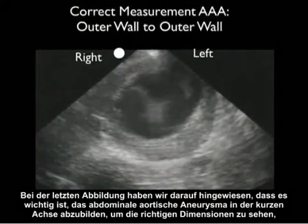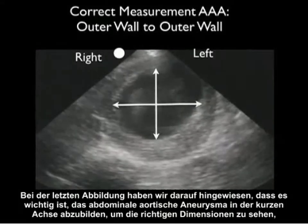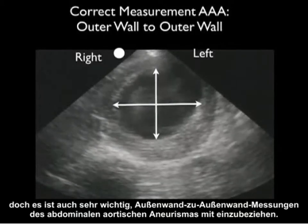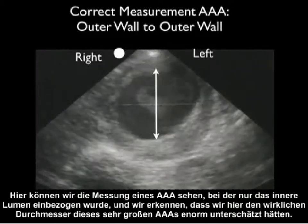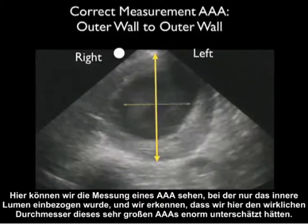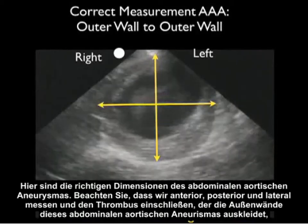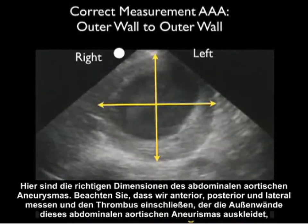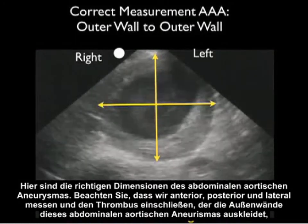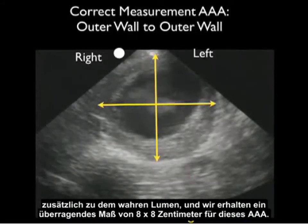It's important to image the abdominal aortic aneurysm in the short axis configuration, but it's also very important to include outer wall to outer wall in the measurements. Here we can see a measurement of a AAA including only the inner lumen, and notice that we could vastly underestimate the true diameter of this very large AAA. Here are the correct dimensions, measuring anterior, posterior, and laterally — including the thrombus that coats the outer walls — in addition to the true lumen, and we get a measurement of 8 by 8 centimeters.